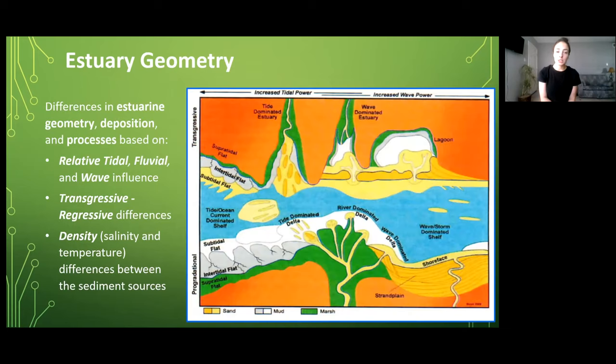The geometry, deposition, and processes that occur in estuaries is very dependent on the relative tidal, fluvial, and wave influence. For example, on this figure we can see that going from left to right it goes from more tidally dominated to the middle which is fluvially dominated to more wave dominated at the right. Additionally, the geometry, processes, and deposition in estuarine environments is also dependent on transgressive and regressive occurrences and density differences between the sediment source and the basin water.